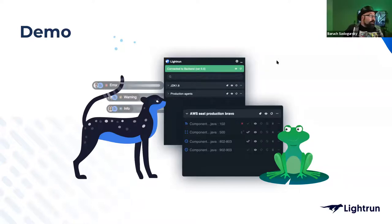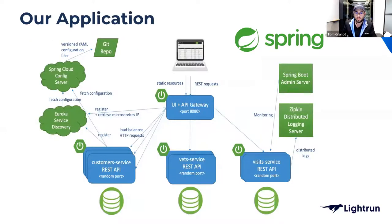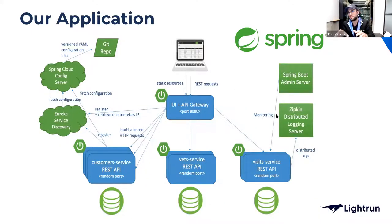This demo combines both the capabilities of JFrog, which gets you from dev to prod, and LightRun, which ensures you stay in prod as long as possible with the highest quality of service. The application we're using is the well-known Spring Pet Clinic — a Java Spring framework app for managing pet clinics, specifically the microservices version. The microservices version has actual application containers plus observability niceties.